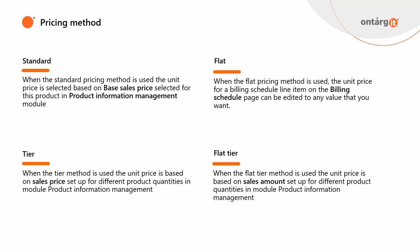Standard pricing — when the standard pricing method is used, the unit price is selected based on the base sales price selected for this product in the Product Information Management module. Flat — when the flat pricing method is used, the unit price for a Billing Schedule line item on the Billing Schedule page can be edited to any value that you want. It is almost the same as the standard pricing method, but the difference is that you can select the unit price manually.